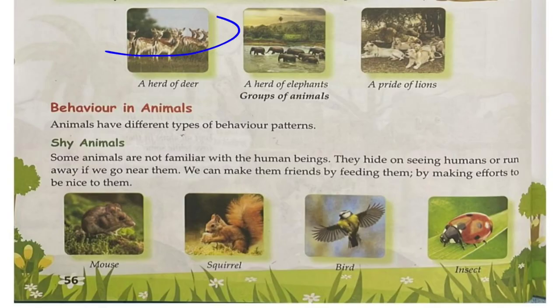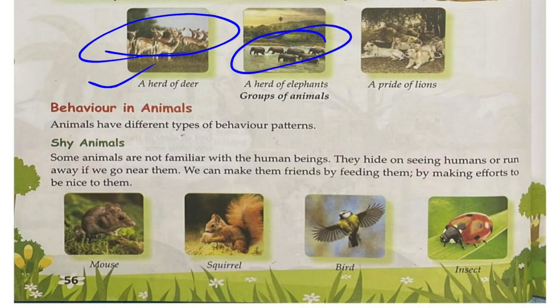You can see these animals are in groups — those are deer, so it is a herd of deer. Those are elephants, so it is a herd of elephants. And those lions form a pride.